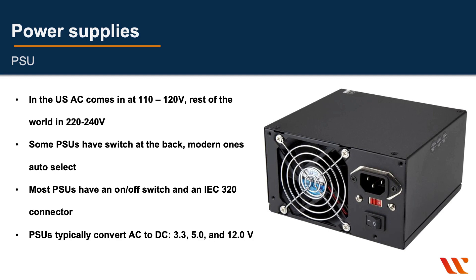In America, PSUs operate on 110 to 115 volts AC, while most other countries use 220 to 240 volts. Some PSUs have a physical switch to toggle between 110 and 220, while others detect the incoming voltage and switch automatically. If there is a switch, make sure it's in the correct position — if you're in Europe and your PSU is set to 110 volts, it will burn out because it's receiving 220 volts.